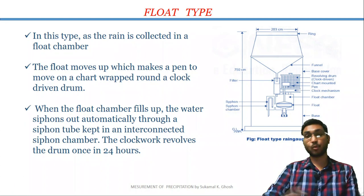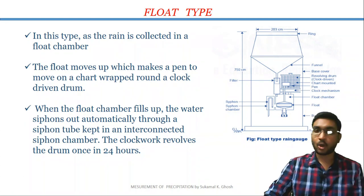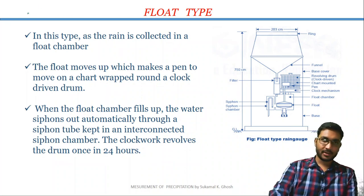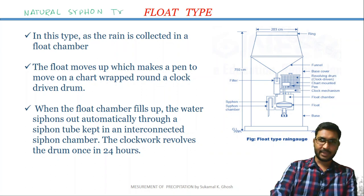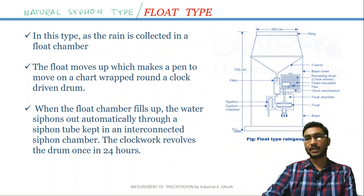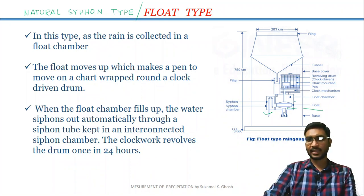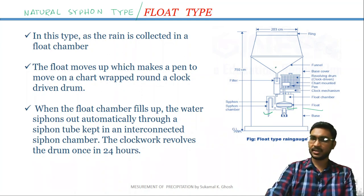The third type of recording gauge is the float type recording gauge, also called the natural siphon type recording gauge. This type of recording gauge consists of a siphon, a float, a float chamber, a siphon chamber, and a funnel.